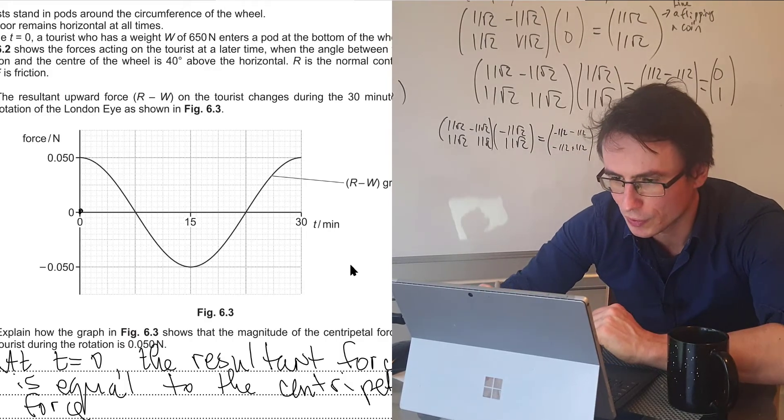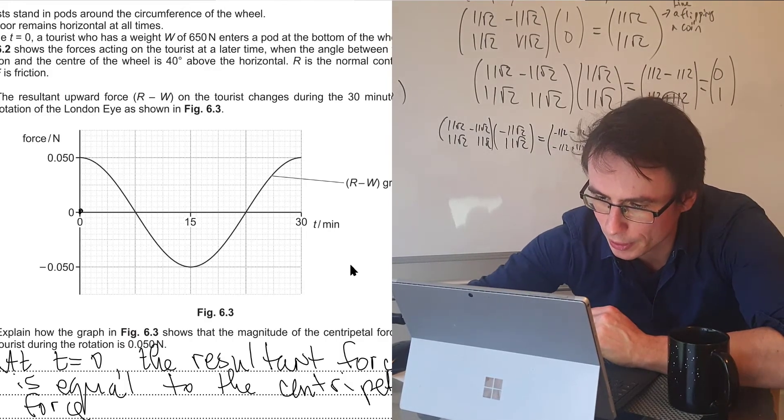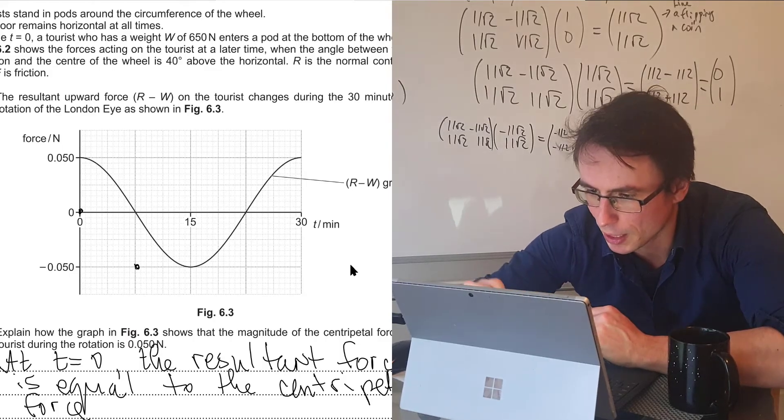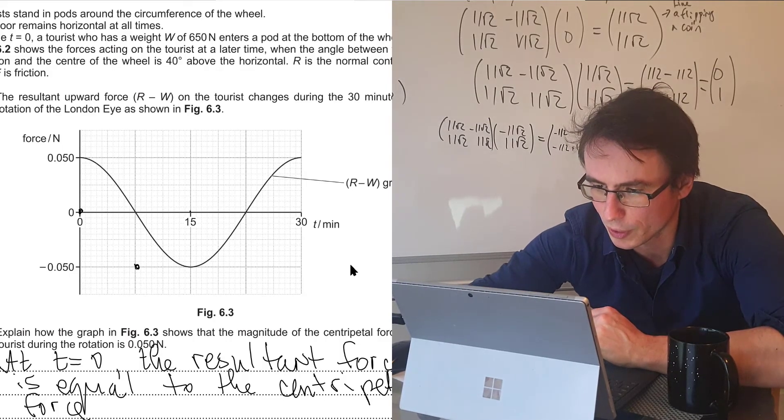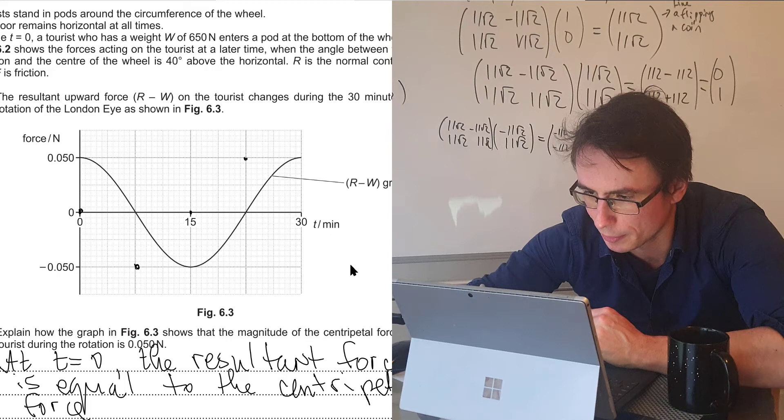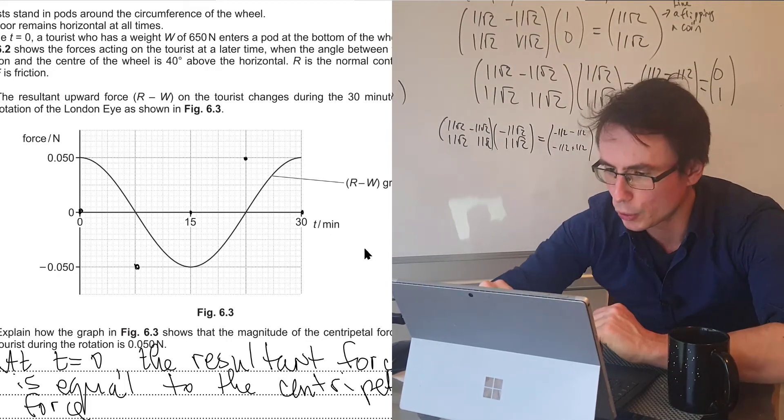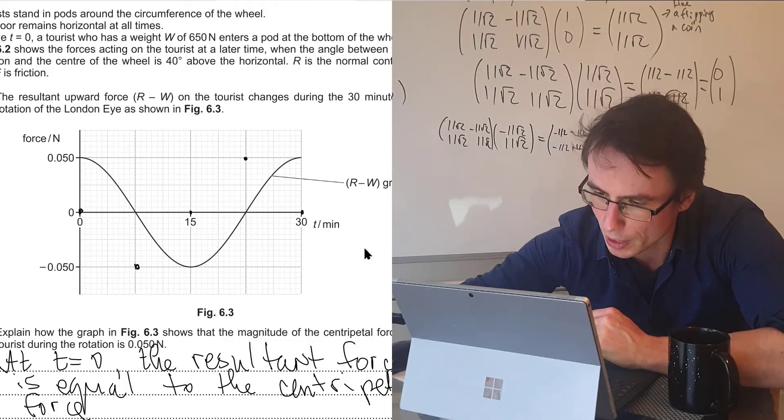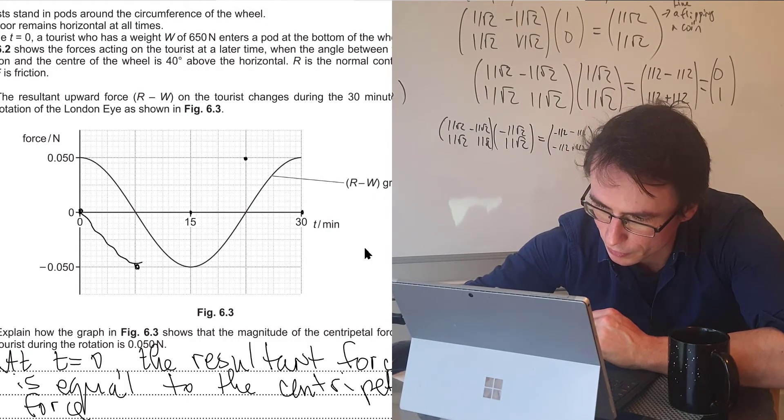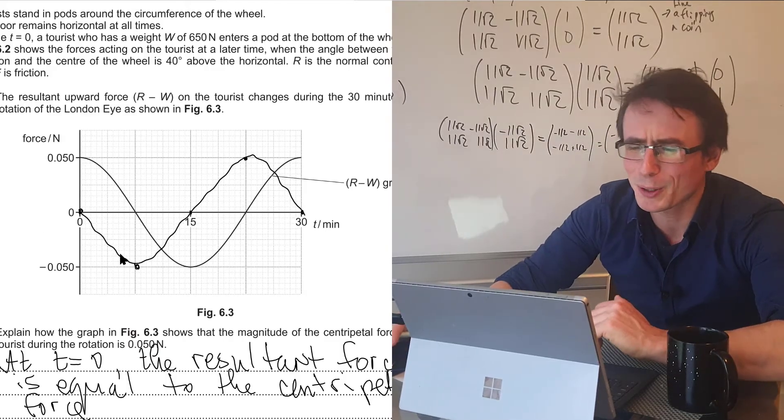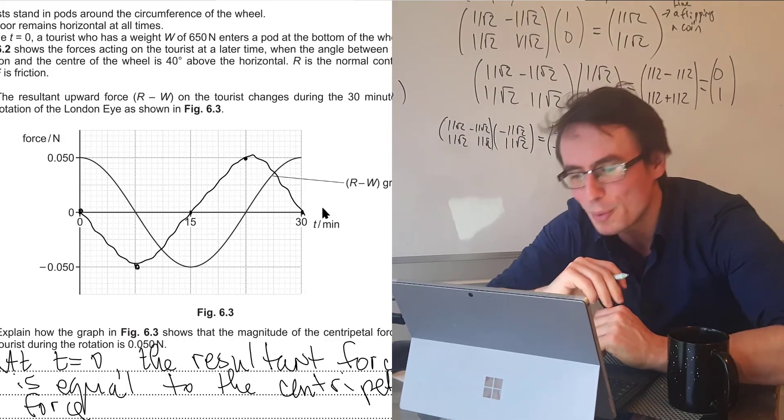And let's sketch this onto the graph. So we're going to start off at zero. Then we're going to have a maximum here. Then halfway through the cycle, we're going to reach zero again. Then we're going to have a maximum here. And then we're going to reach zero again at the end of the ride. So this means that it's going to look something like this. In the real example, please make sure that your curve is a lot more smooth.